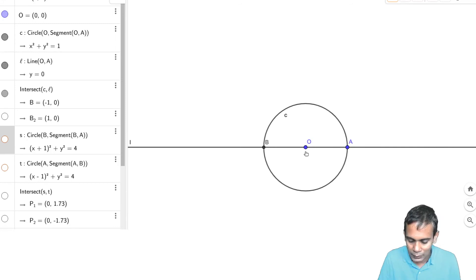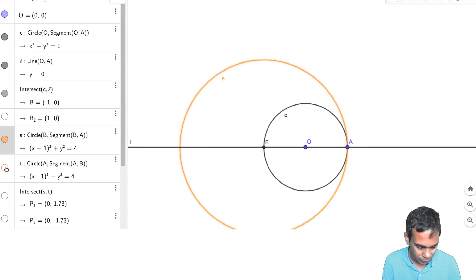And now what we will do is we will construct a perpendicular to this line L using these points B and A. So now what I will do is I will take a circle with center B and radius BA. Okay, that's the orange circle. I am calling it S. And similarly I will take a circle with center A and radius the distance from A to B. I am calling that circle T. Now these circles S and T they intersect in two points P1 and P2.